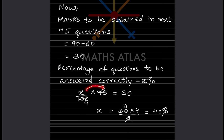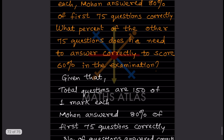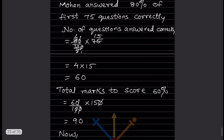Taking x to one side: x = 30 × 4 divided by 3. That gives us 30 × 4 = 120, divided by 3 = 40. So the percentage of questions to be answered correctly is 40%. That is the answer: he needs to answer 40% of the other 75 questions correctly to score 60% in the exam.